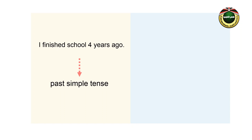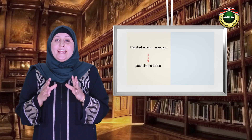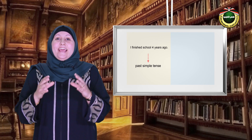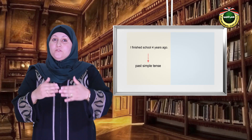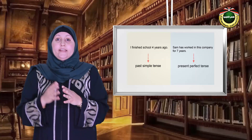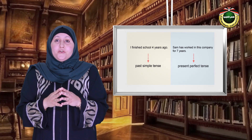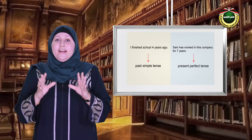The past simple tense describes an action that started and ended in the past — it is no longer there, totally completed and finished in the past. Such as saying: I finished school four years ago. This means that I started and ended in the past and I am no longer a student now. While case number four expresses an action that started in the past and is connected with the present, and sometimes may continue in the future.